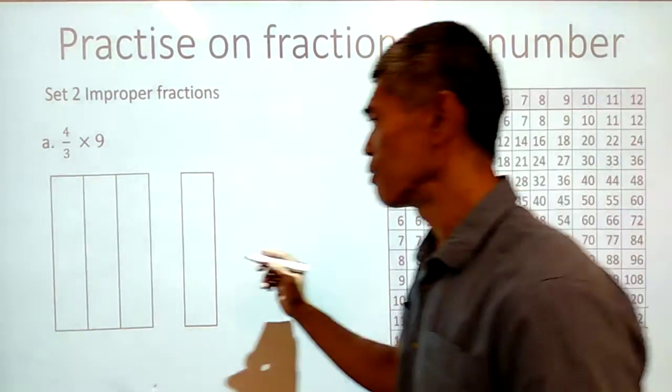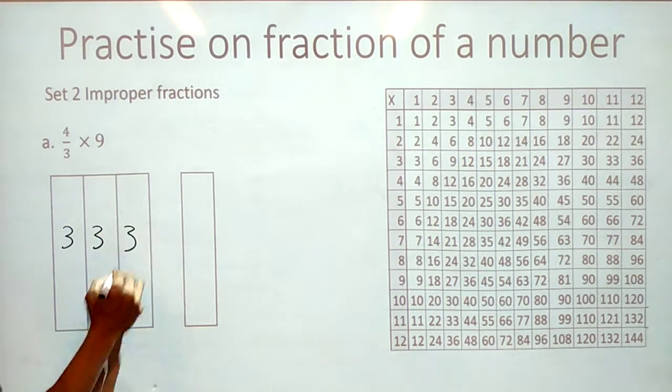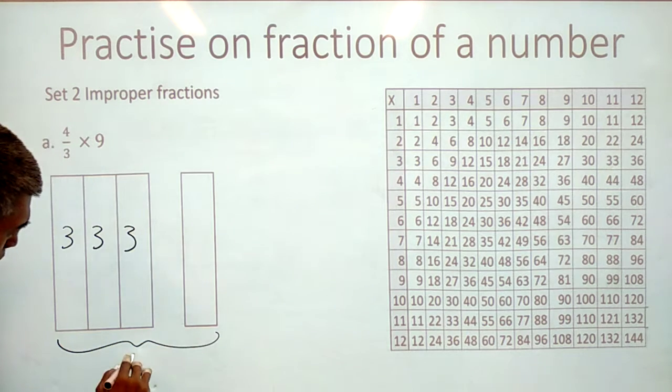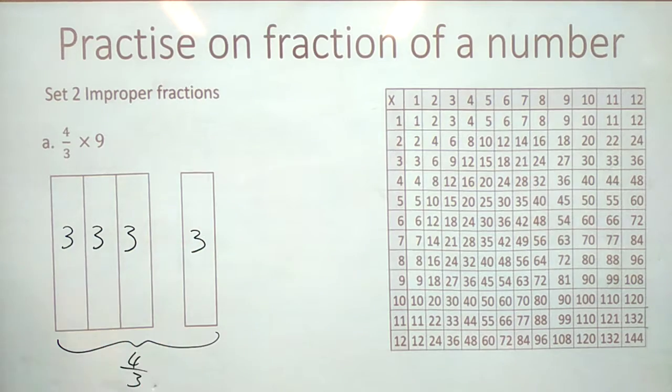9 divided by 3 gives you 3 in each part. Now, if you want 4 thirds of 9, it means you are asking for an extra part over here. That's 4 thirds. And this extra part will contain 3.